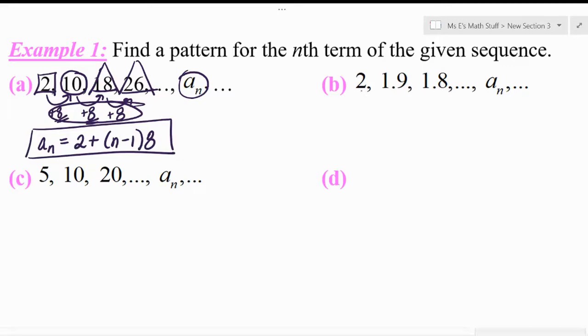All right, for part B, is part B arithmetic? What are they adding to get from 2 to 1.9? Well, they're adding negative 0.1. And did they do it again? Did they jump to the third term? Sure, they did.